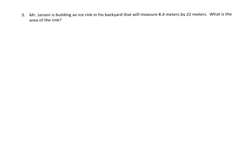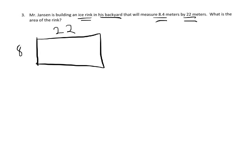All right, let's practice that with a word problem. So Mr. Jansen is building an ice rink in his backyard. Oh, I wish I had an ice rink in my backyard. Okay, that will measure 8.4 meters by 22 meters. What is the area of the rink? So we know that what we're going to be doing is we're going to be multiplying because we've got a rectangular rink. And we know we're being asked to find the area of that rink. And the area means we're going to multiply the length times the width. So let's do that. And we're going to use that standard algorithm.